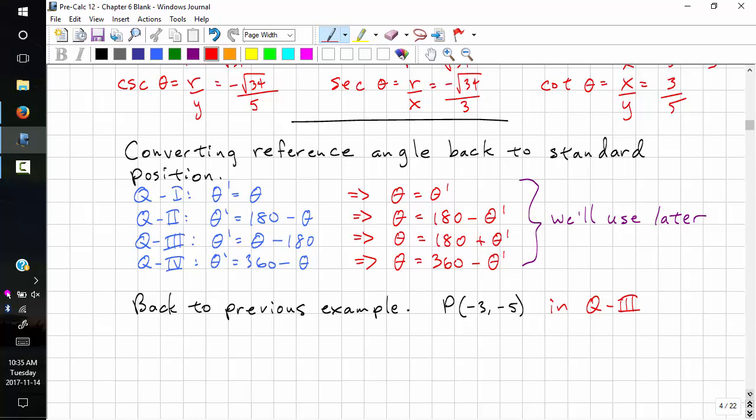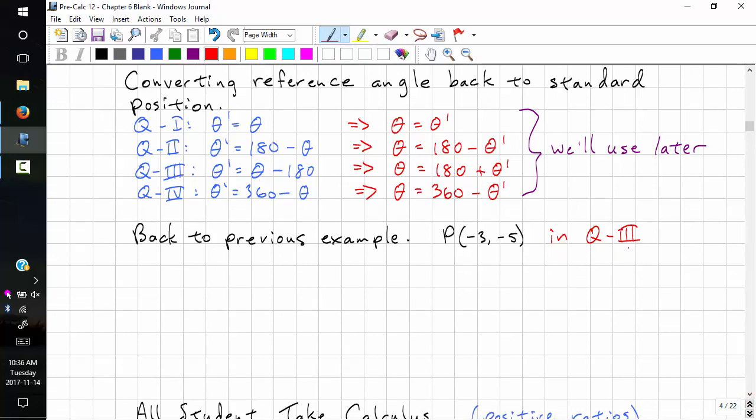We need to be able to convert the reference angle back to standard position. There's a different formula for every quadrant. This is converting reference angle to standard positioning. This is converting standard positioning to the reference angle. You don't need a graph, you can just do it with formulas.